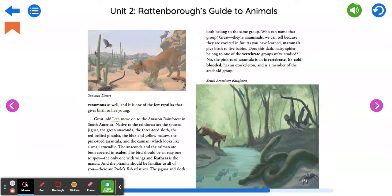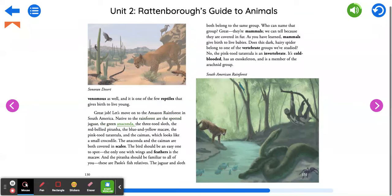Great job! Let's move on to the Amazon rainforest in South America. Native to the rainforest are the spotted jaguar, the green anaconda, the three-toed sloth, the red-bellied piranha, the blue and yellow macaw, the pink-toed tarantula, and the caiman, which looks like a small crocodile.